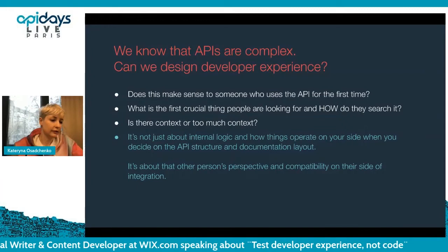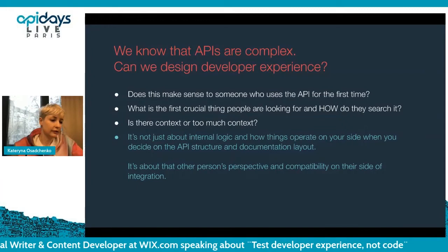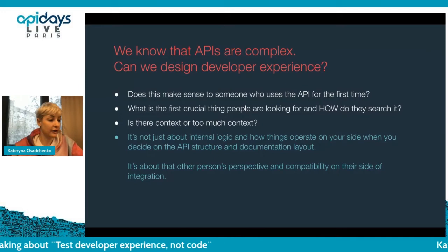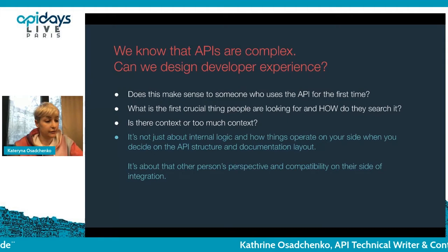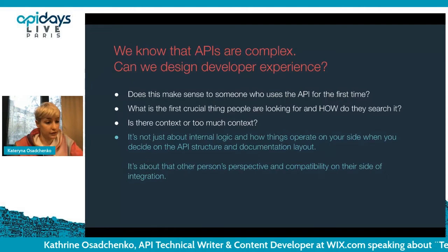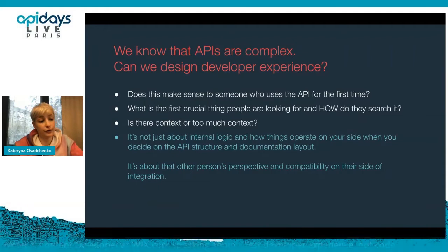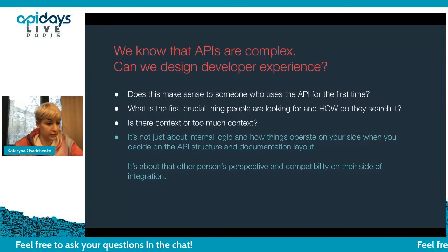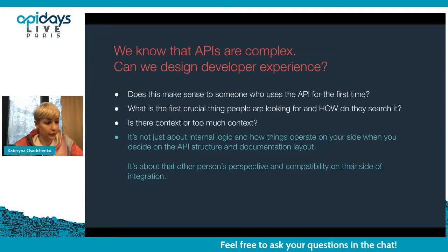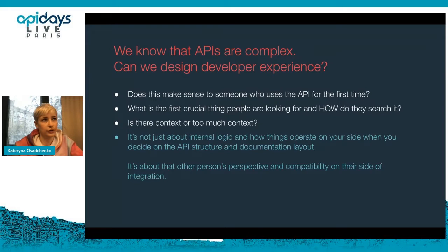APIs are complex with many dependencies, and by the time we get from design to documentation, different people take ownership. How can we better incorporate developer experience when designing APIs? One starting point is asking yourself: does this make sense to someone using this API for the first time? What is the first crucial thing they're looking for, and how do they search for it? Is it confusing or straightforward to get to the final result?